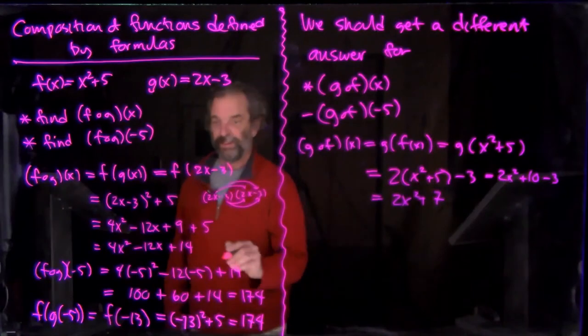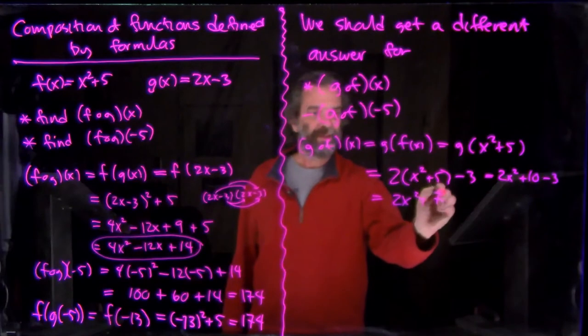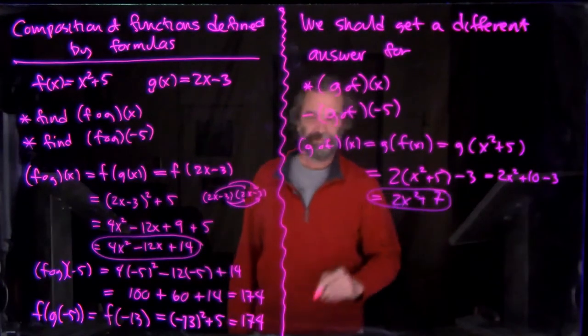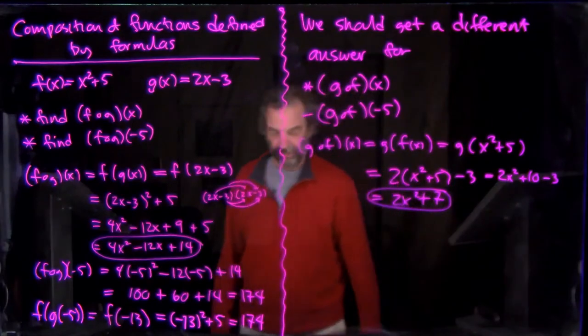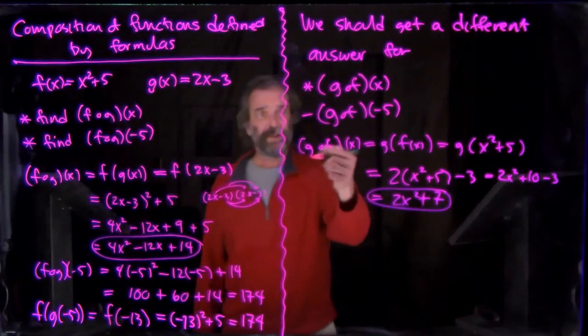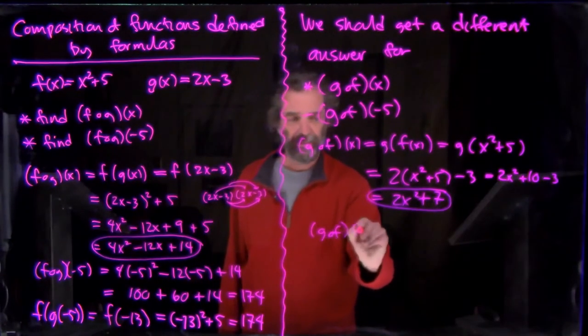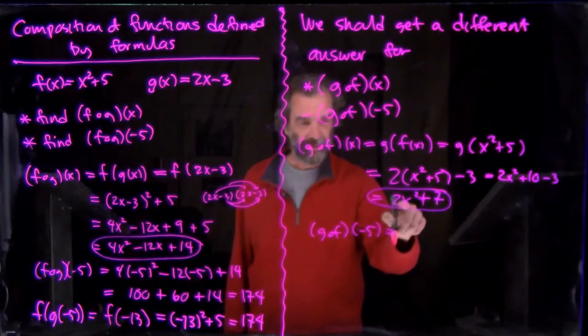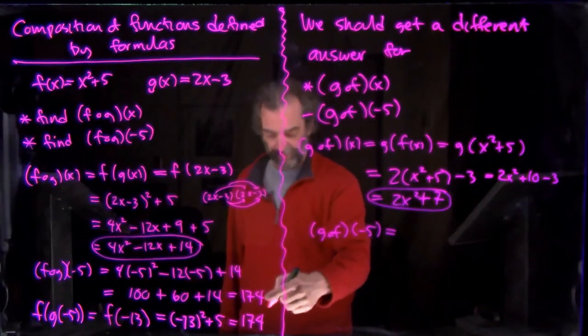So over here we did f composed with g. We got this quadratic formula. And over here with g composed with f, totally different idea. Still quadratic, but it's a totally different formula. And then we go ahead and plug in -5. g composed with f at -5. That's going to be the same number, right? So we should get a different answer. We got 174 over here.